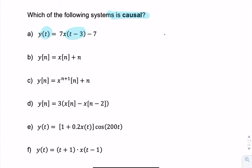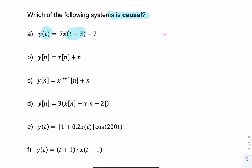We ask the question: is t minus 3 always less than or equal to t? And the answer is yes, always. So therefore the first system is causal.